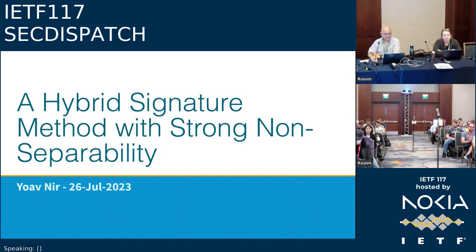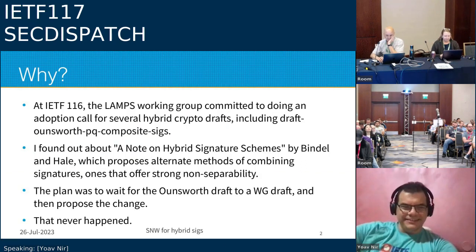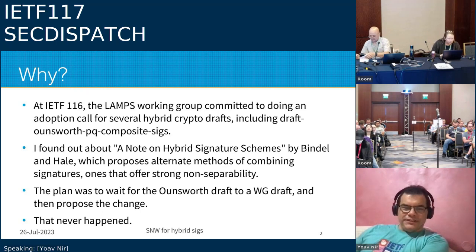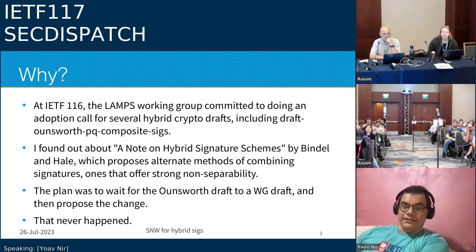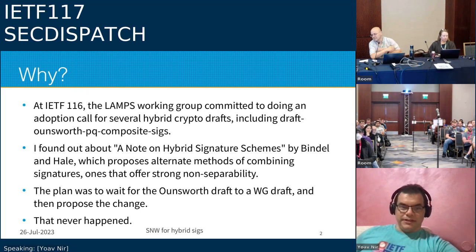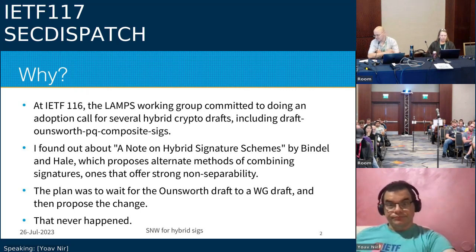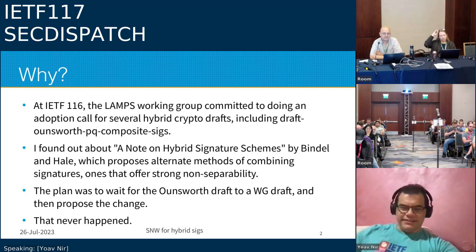Yoav begins the next presentation. At IETF 116 in LAMPS, they decided to do an adoption call for all of Mike Owensworth's drafts including the composite signatures. He found out about an academic article — 'A Note on Hybrid Signature Schemes' by Bindel and Hale — which proposes alternate methods of creating hybrid signatures from classic and post-quantum signature algorithms that offer strong non-separability. His plan was to wait for LAMPS to adopt the Owensworth draft and then propose doing it the other way, but that didn't work out, so he published his own draft.